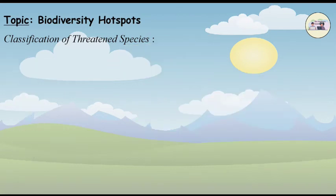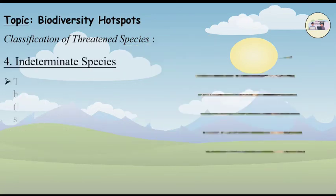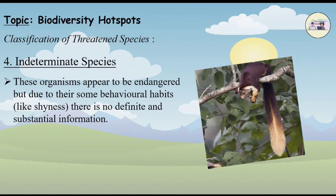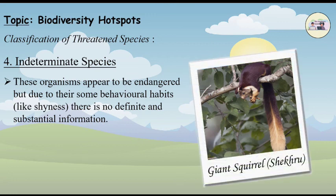4. Indeterminate species: These organisms appear to be endangered, but due to their self-behavioral habits, there is no definite and substantial information. Examples: giant squirrel, shikaru.